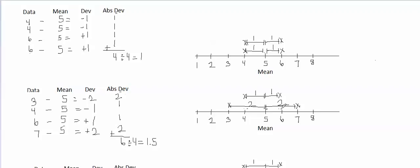When this data value went from six to seven, it also moved from one away from the mean to two away from the mean, so the distance from seven to the mean of five is two. Now two of our data values are two away from the mean, meaning two of our absolute deviations have gone up to two. They used to all be one, but as the data gets more spread out, two values are now two away. Since two absolute deviations went up, the mean of the absolute deviations also went up — the total is now six instead of four, so dividing by four gives 1.5 instead of 1.